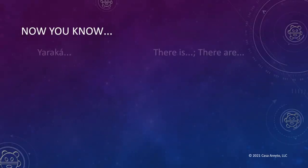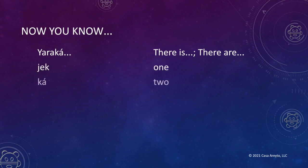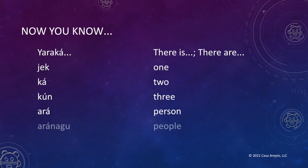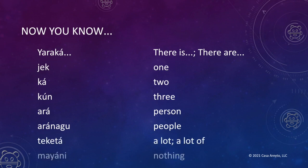Now you know how simple it is to use yara ka to mean 'there is' or 'there are.' Let's review everything we learned today. Yara ka — there is or there are. Hek — one. Ka — two. Kun — three. Ara — person. Ara nāgu — people. Tequeta — a lot, or a lot of. Mayani — nothing.